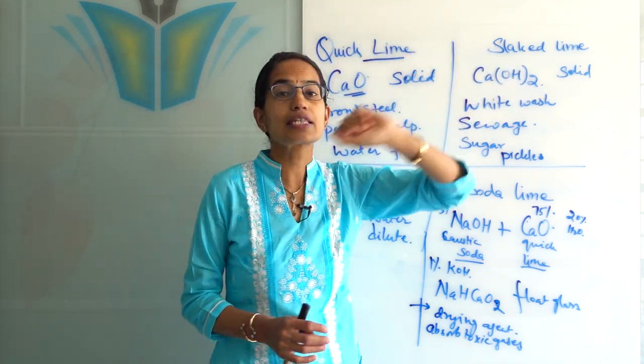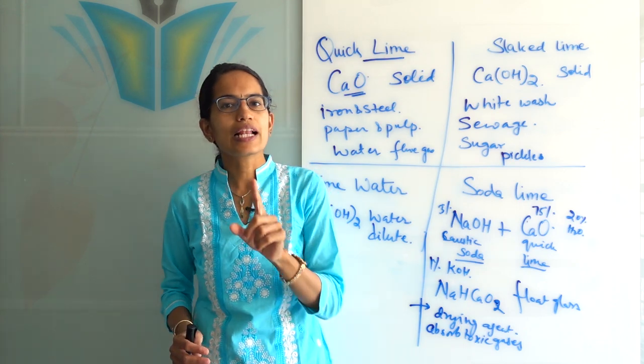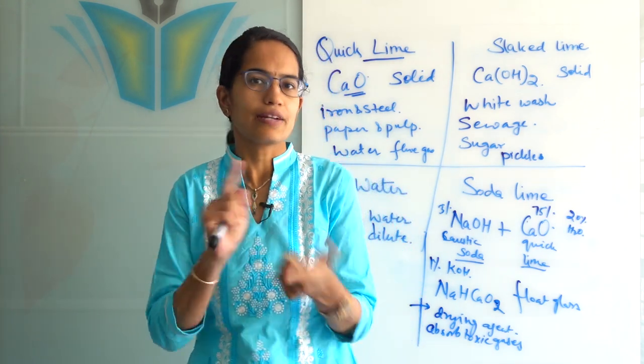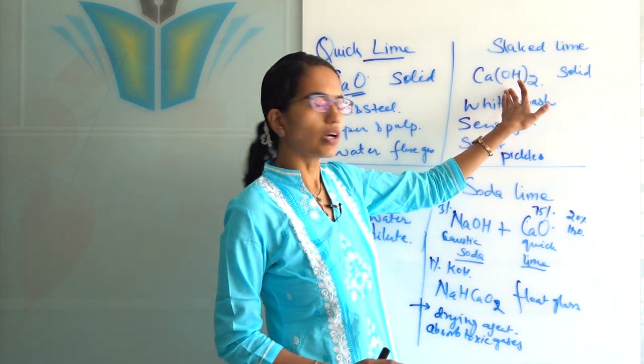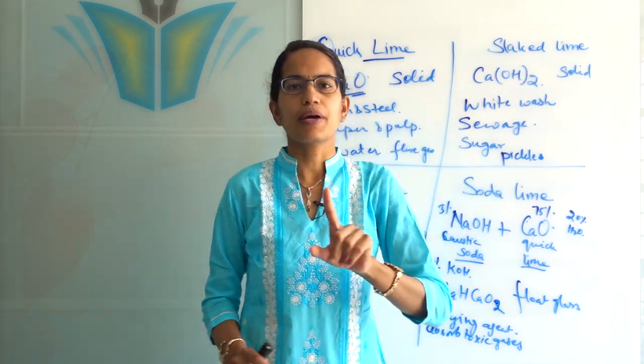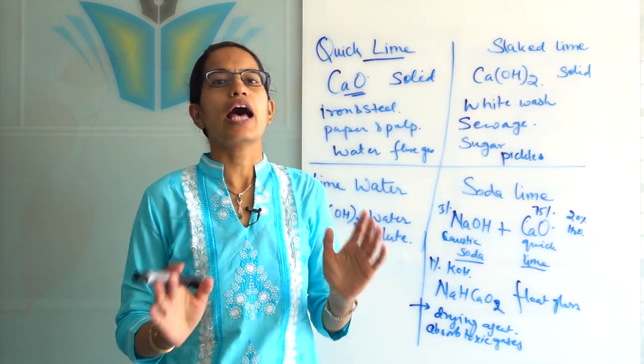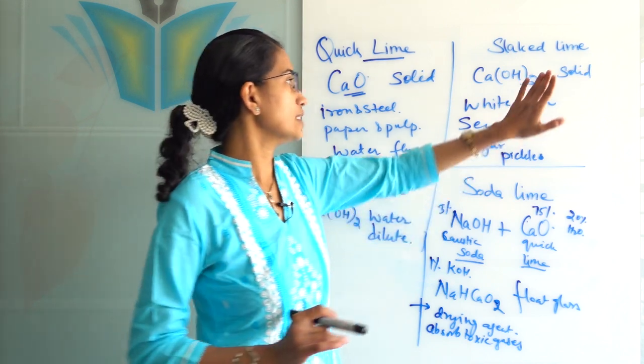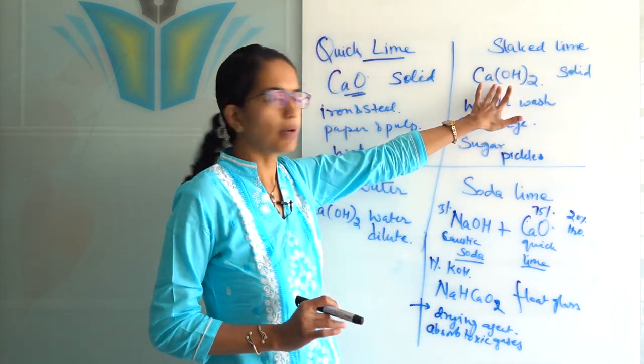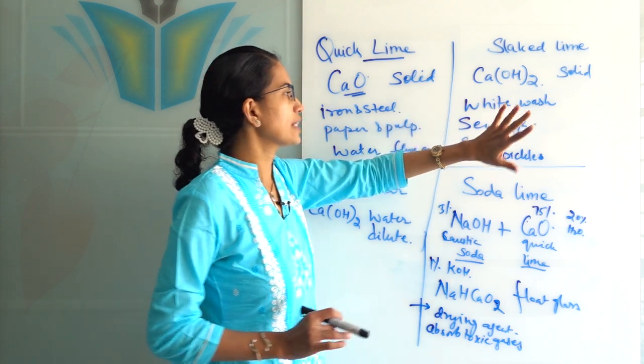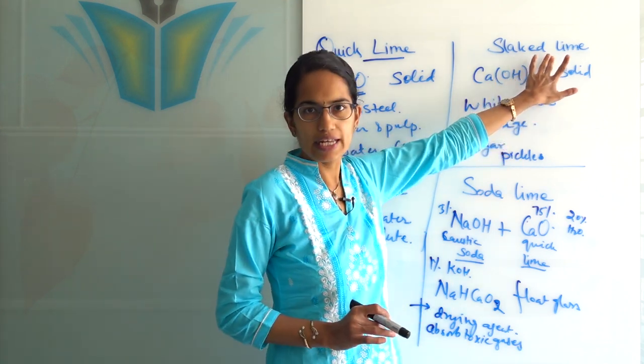Coming on next is slaked lime. Slaked lime is calcium oxide plus water, that means calcium hydroxide. But this calcium hydroxide exists as a solid material. This solid form of calcium hydroxide which is white in color is known as slaked lime.